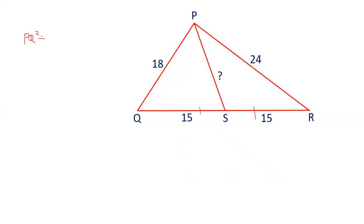So let's take PQ square and PR square. That will be equal to twice of PS square plus QS square. You can take RS also because both are same. This formula is known as Apollonius theorem. So we can solve the question by Apollonius theorem.